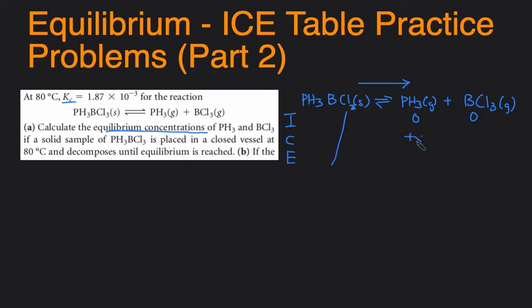Then the C line, this would be plus x and plus x, and then the E would just be x and x. Since we're given the Kc, we can set up the Kc expression. Kc is going to equal concentration of PH3 times the concentration of BCl3. Plug in the values: Kc is 1.87 times 10 to the negative 3 equals x times x, so x squared.